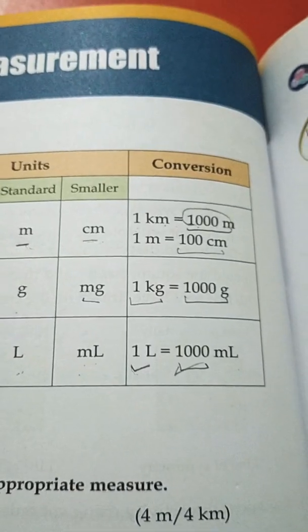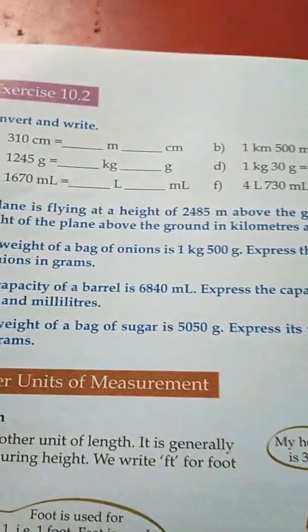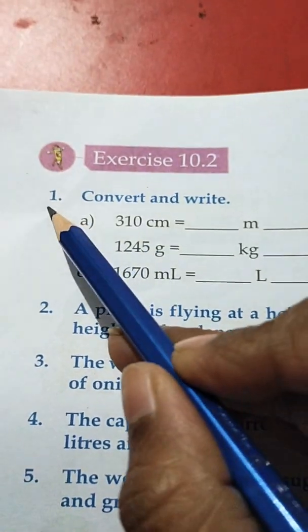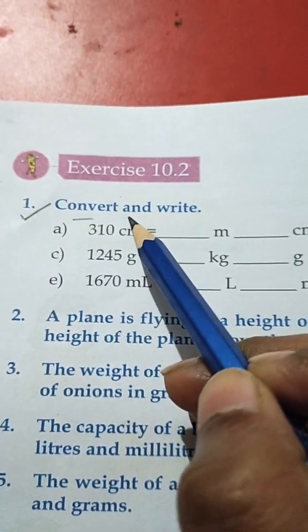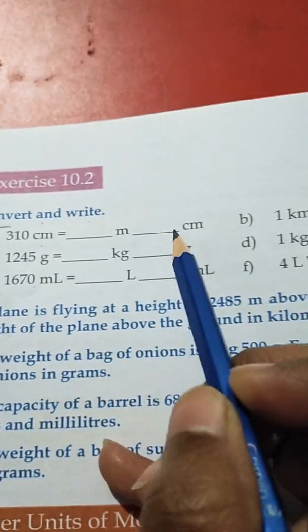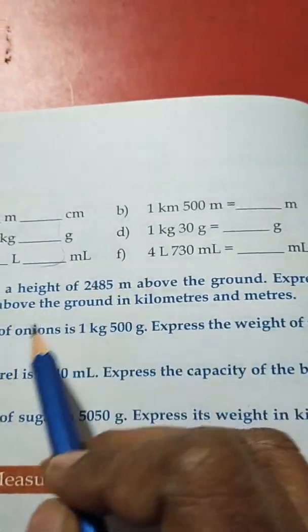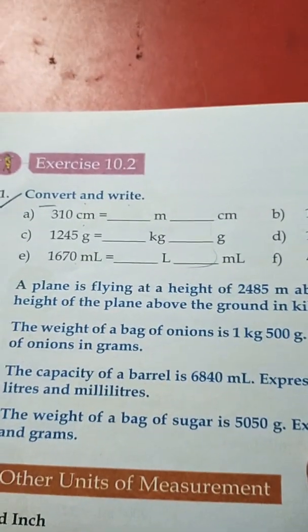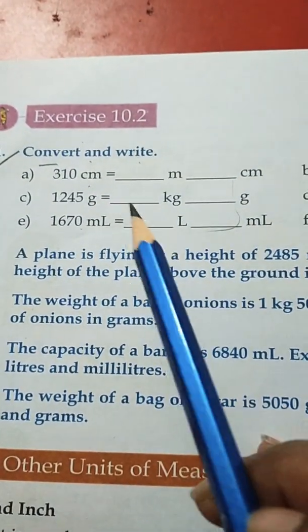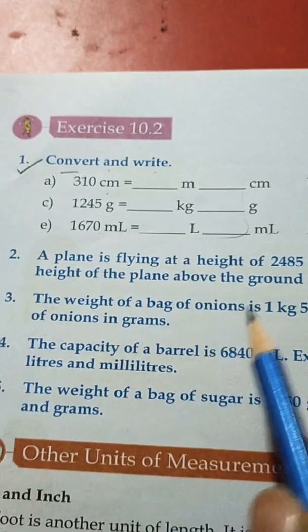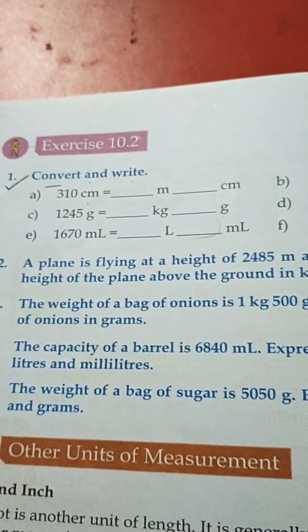Now we are going to do exercise 10.2. The first sum is 'convert and write.' When the conversion is in the form of blanks, it is very easy — just one trick to keep in mind. We only have to differentiate the digits.